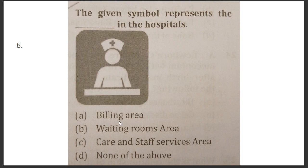Question number five: The given symbol represents what in the hospitals? Option A: Billing area, Option B: Waiting rooms area, Option C: Care and staff services area, Option D: None of the above. The answer is Option C, care and staff services area.